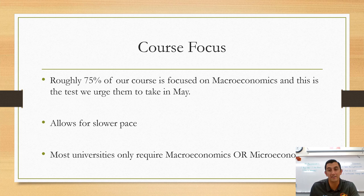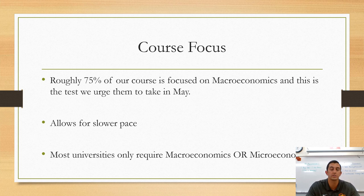The course focuses about 75% of class time on macroeconomics versus micro. This allows us to slow down the pace and study the entire macroeconomics curriculum over the full year, versus some institutions that do micro one semester and macro another, which effectively makes you go twice as fast. For most universities, unless you are in a finance, business, or economics field, they would require either macroeconomics or microeconomics to fulfill the GE requirement.